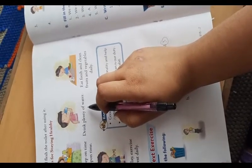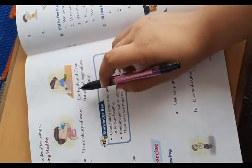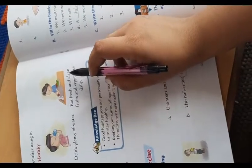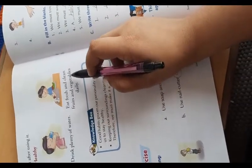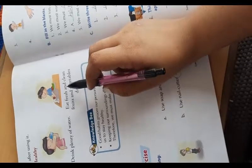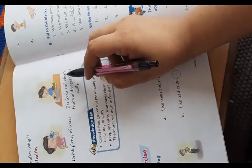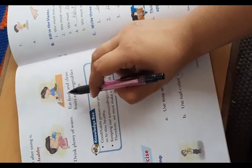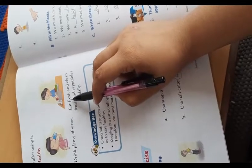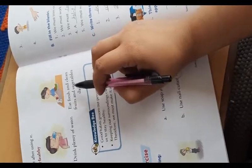Drink plenty of water. We have to drink at least six to eight glasses per day. Eat fresh and clean fruits and vegetables daily. When we bring vegetables and fruits to our home, first we have to wash them, then clean them, then we have to eat.